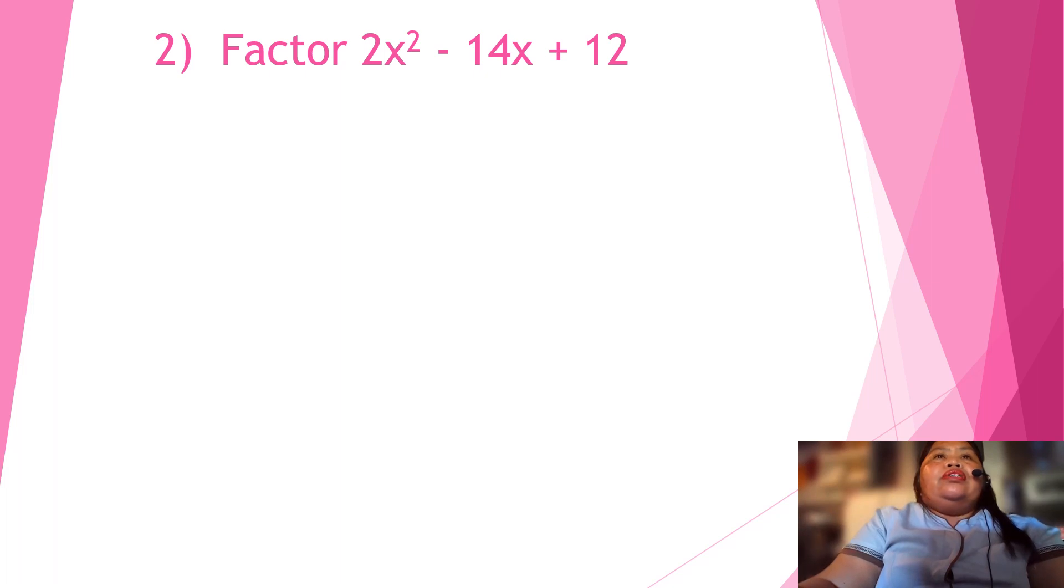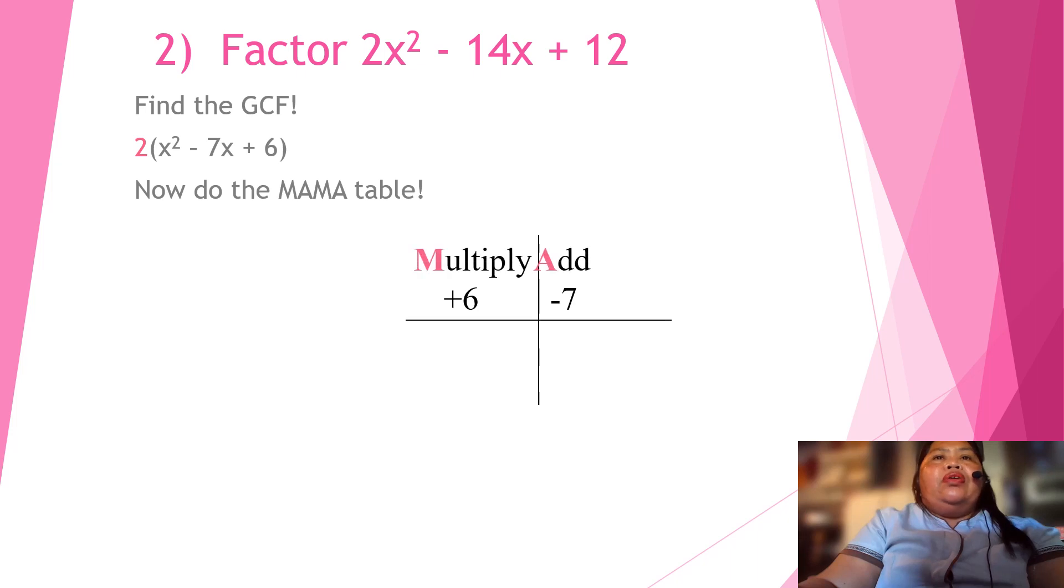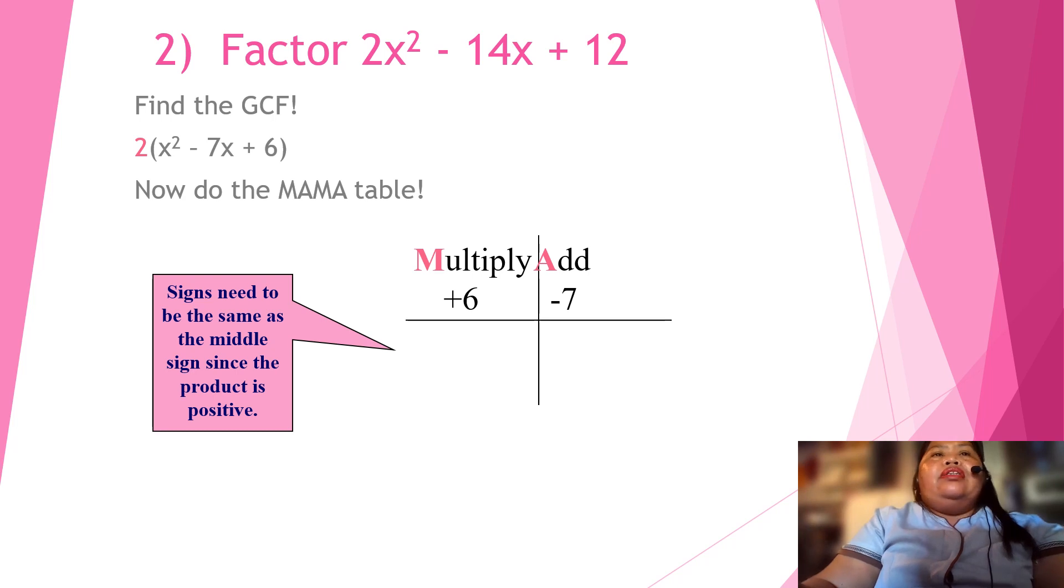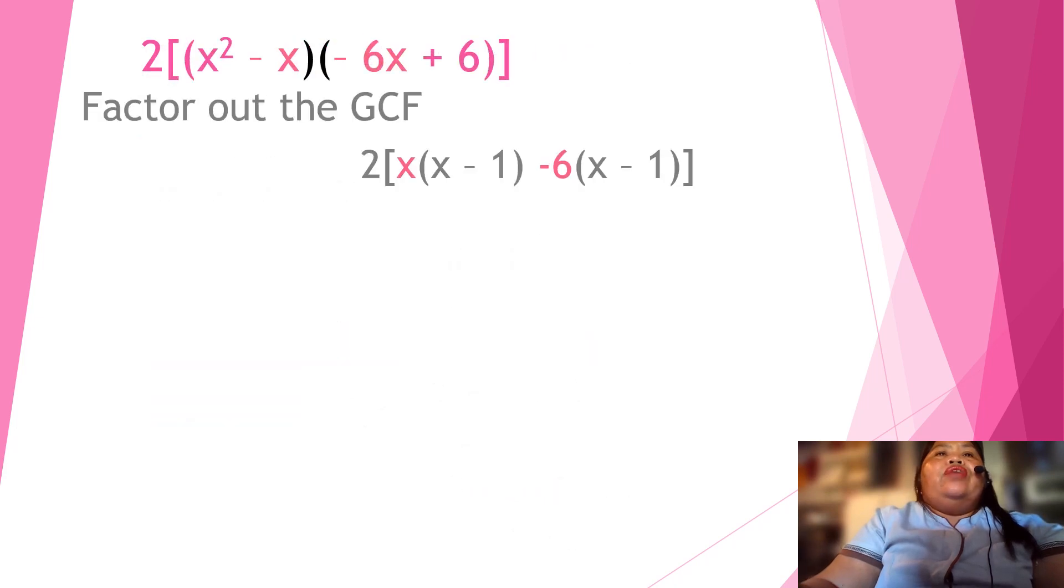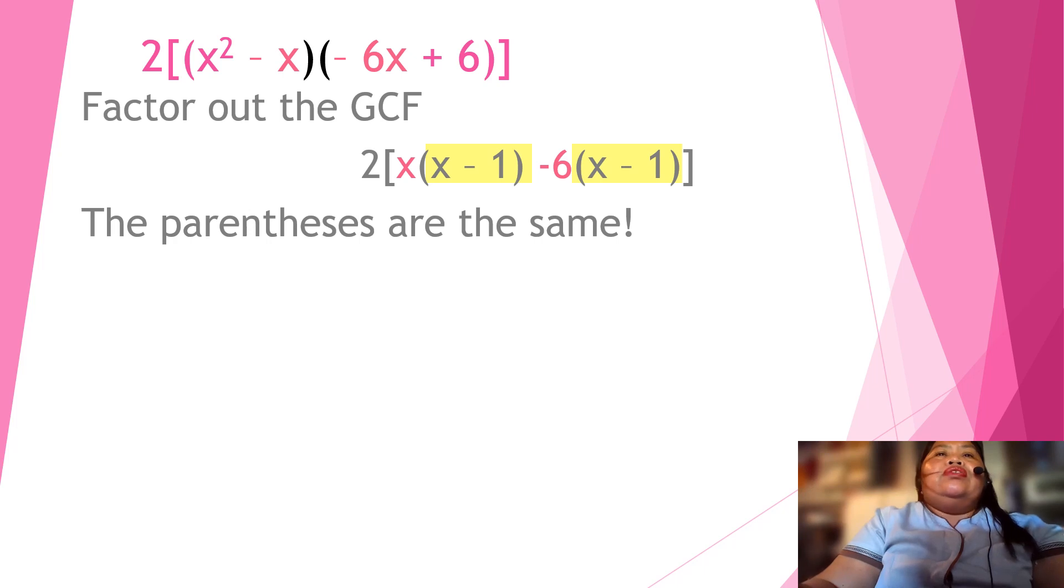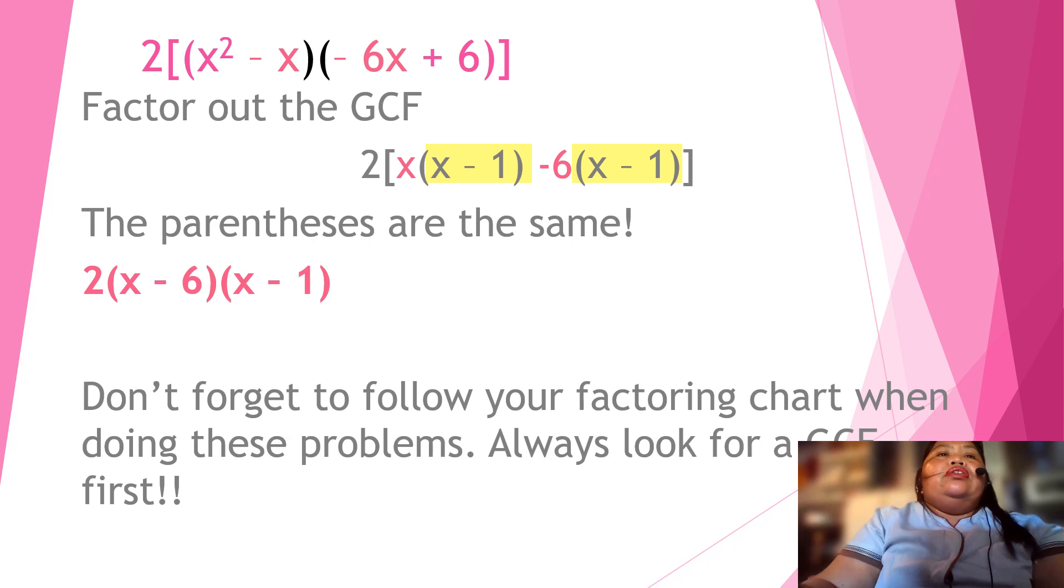So, the same here. Factor 2x squared minus 14x plus 12. Find the GCF first, which is 2. And then, now do the MAMA table. For 6, 2 times 12 equals 24. But, since we have here 6 only, so we will get that 6 from here. And then, the signs need to be the same as the middle sign and the product is positive. So, we have negative 7. Let's replace the middle term. So, we have x squared minus x minus x plus 6. And then, we have negative 7 to group them. Find the factors. So, we have x minus 1. And so, the parentheses are the same. Don't forget to follow your factoring chart when doing these problems. Always look for GCF first.